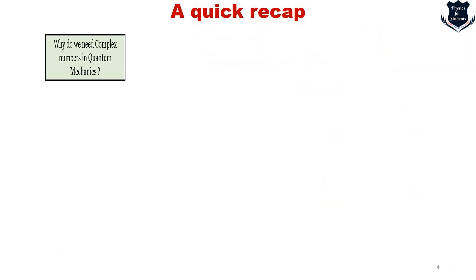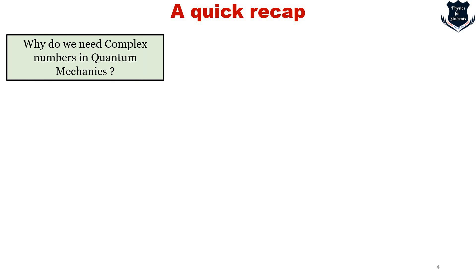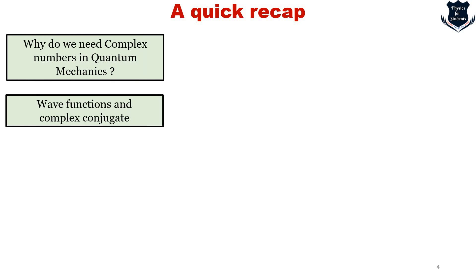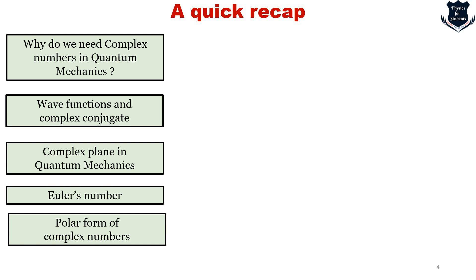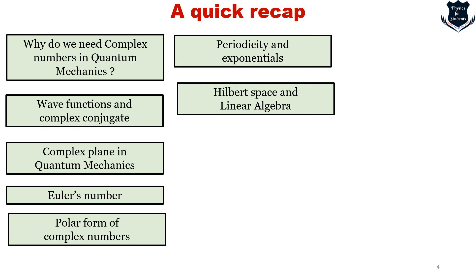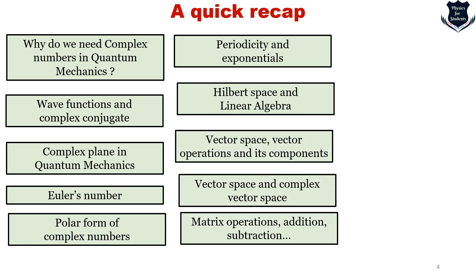If you have been watching my earlier videos on the mathematics of quantum mechanics, we have learnt why we need complex numbers in quantum mechanics. We have also seen wave functions and complex conjugate, how the complex plane is important, Euler's number, and polar forms of complex numbers. Further, we understood periodicity and exponentials, Hilbert space and linear algebra, vector space, vector operations, complex vector space, matrix addition, etc.